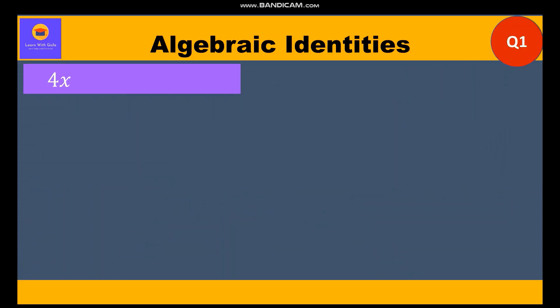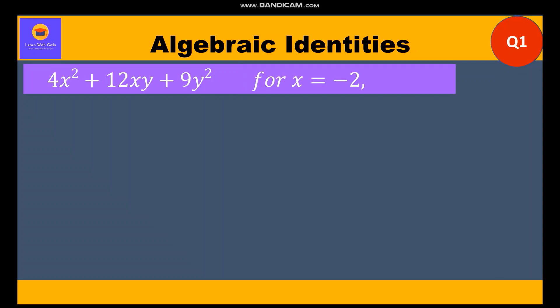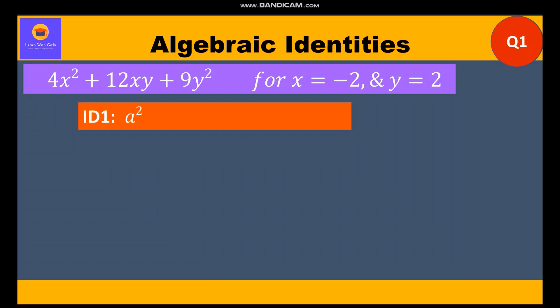The first question is 4x² plus 12xy plus 9y², and the given values are x = -2 and y = 2. Clearly this expression matches identity 1, that is a² + 2ab + b² = (a+b)².